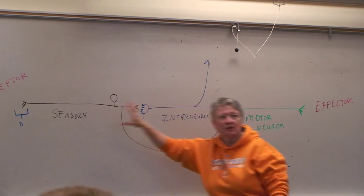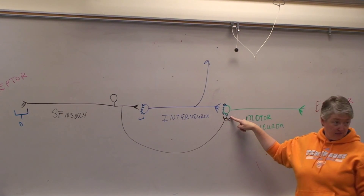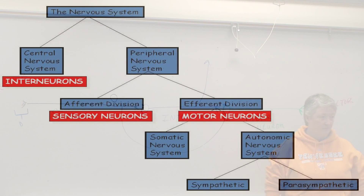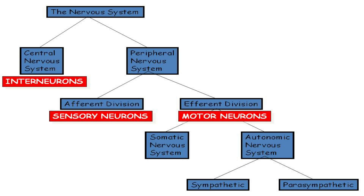Interneurons are neurons that are between sensory neurons and motor neurons — you don't have to have an interneuron. Sensory neurons are part of the afferent division; most are unipolar, some are bipolar because of the special senses. Motor neurons are part of the efferent division. The synapse between sensory and motor neurons happens in the spinal cord. Sensory neurons end in the central nervous system; motor neurons begin there; but the axons of these neurons are in the peripheral nervous system. All interneurons are in the central nervous system.